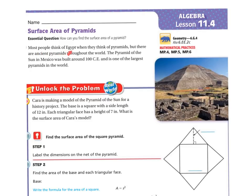Most people think of Egypt when they think of pyramids, but there are ancient pyramids throughout the world. The Pyramid of the Sun in Mexico was built around 100 CE and is one of the largest pyramids in the world. Let's unlock the problem.